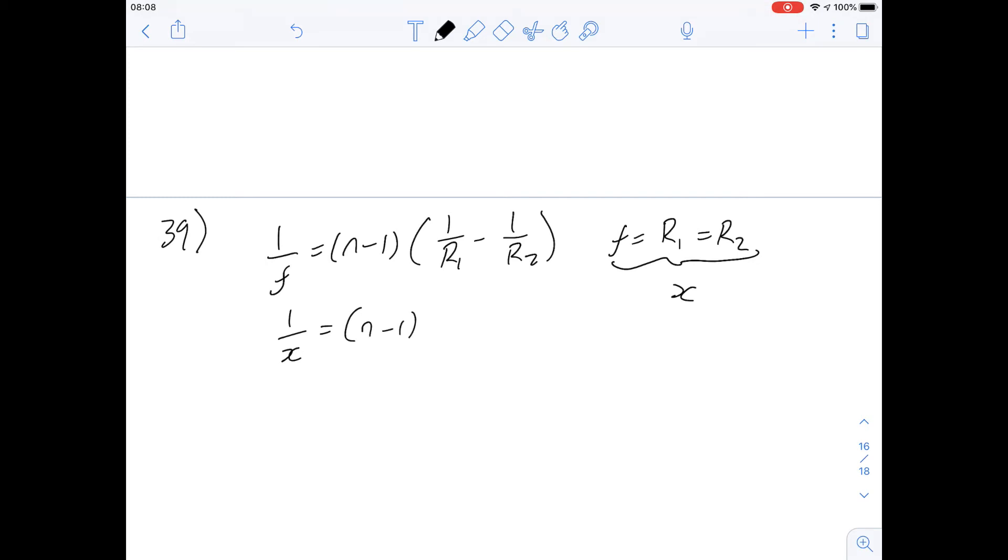So we've got 1 over x equals n minus 1 upon 1 over x. And again, because it's a bi-convex lens, it's going to be plus 1 over x here. And then we can just solve for this.